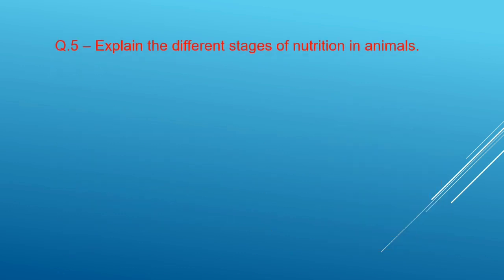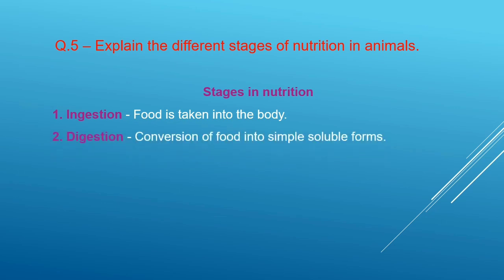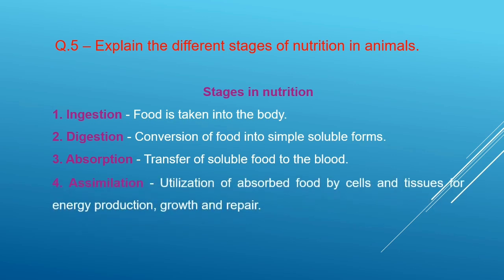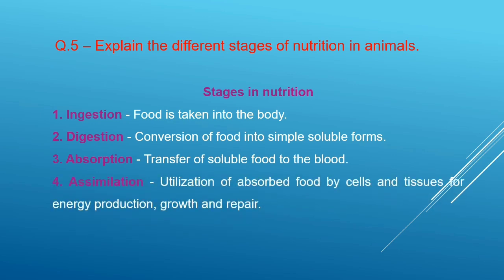Question number 5 is Explain the different stages of nutrition in animals. Stages of nutrition is 1. Ingestion Food is taken into the body. 2. Digestion Conversion of food into simple soluble forms. 3. Absorption Transfer of soluble food to the blood. 4. Assimilation Utilization of absorbed food by cells and tissues for energy production, growth and repair. 5. Egestion, removal of waste products and undigested food from body.